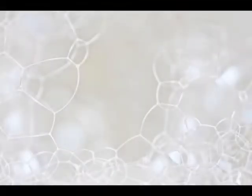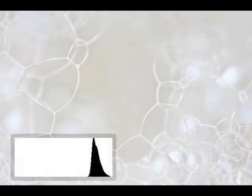Now let's look at some actual image examples to make things more clear. The first image is of bubbles — it's a high-key image full of light tones. Think for a second what you would expect the corresponding histogram to look like. Here it is: it's a bump on the right-hand side of the graph.